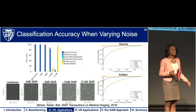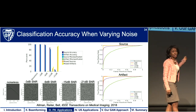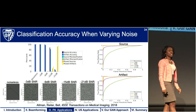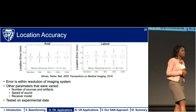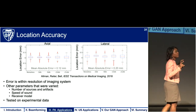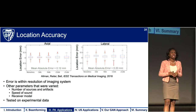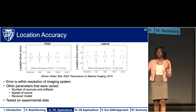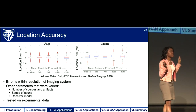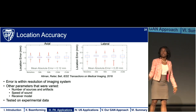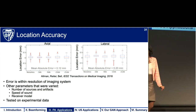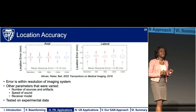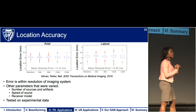As channel noise increases, accuracy with which we can detect sources and artifacts drops, and we see more missed sources and artifacts. This is displayed in the ROC curves for the source and the artifact, where we have perfect detection in the noiseless and minimal noise cases, degrading as noise level increases. Another metric of interest is location accuracy — how well can we determine where the peak of the wavefront is located? We measure this in the axial dimension (depth) and the lateral dimension (along the transducer array). The take-home message is that across multiple levels of channel noise, our accuracy is sub-millimeter — about 0.1 mm in the axial dimension and 0.2 mm in the lateral dimension.